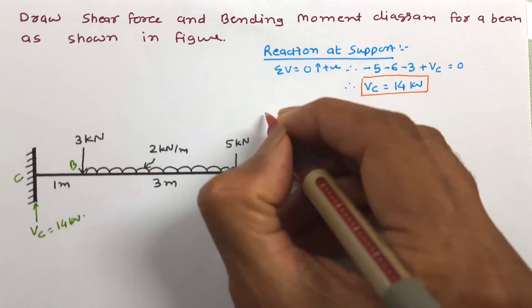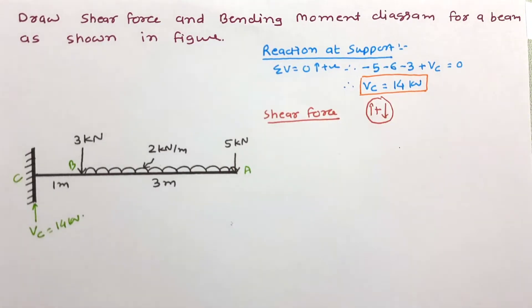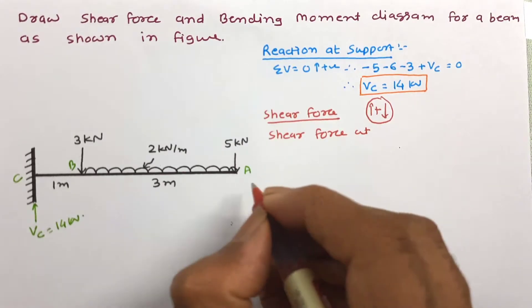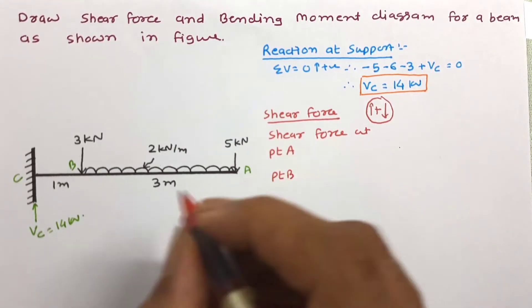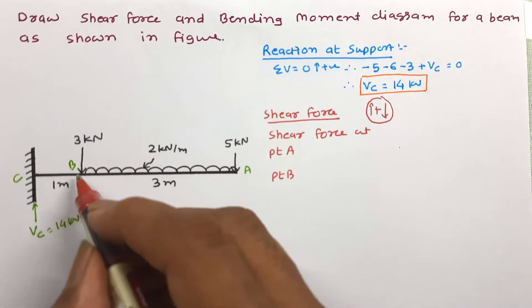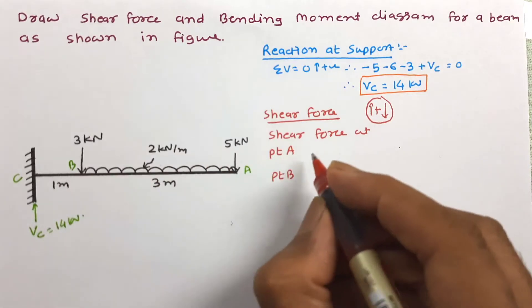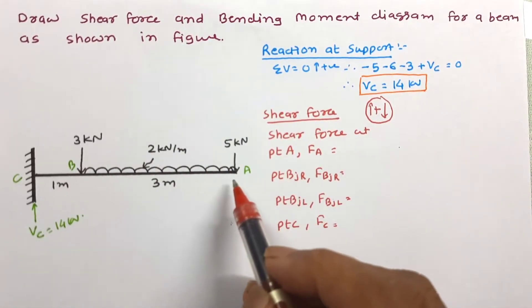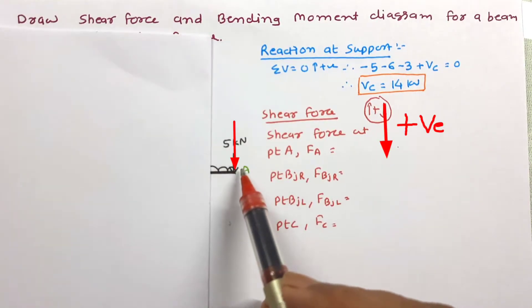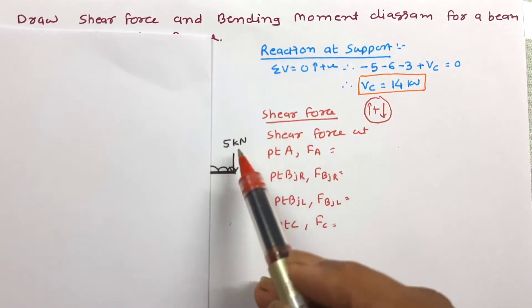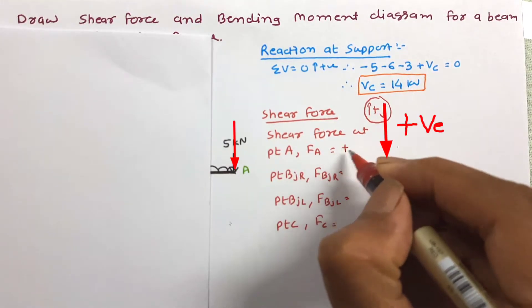Now let us work out shear force first. This is the sign convention for shear force — we work out shear force at all important points. At point B, the UDL is ending and a point load is there, so we calculate shear force at just left and just right of B. Starting from the right-hand side, downward force is positive, so at point A the shear force is plus 5 kN.